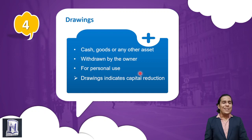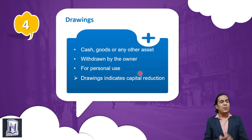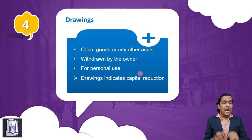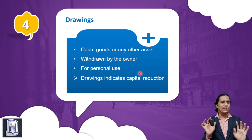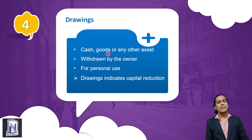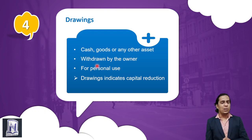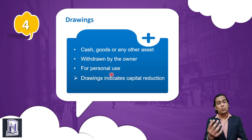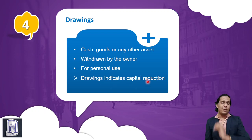The opposite of capital is 'drawings.' Drawings means to take back the capital from the business. Cash, goods, or any other asset — paisa, maal, ya koi bhi qeemti cheez — withdrawn by the owner for personal use is known as drawings. Drawings indicates capital reduction: the owner gives money to the business as capital and takes it back as drawings, so ultimately capital gets reduced.